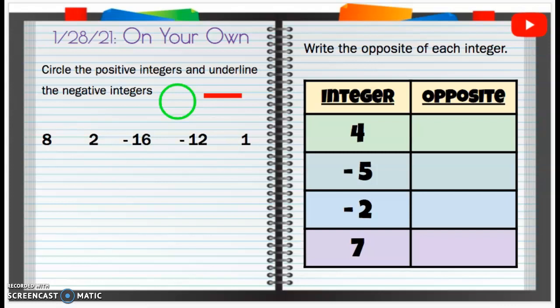January 28th, 2021, on your own. Circle the positive integers and underline the negative integers.